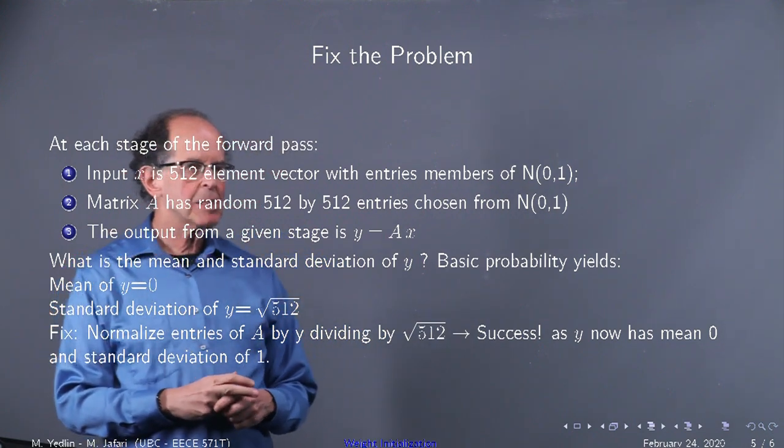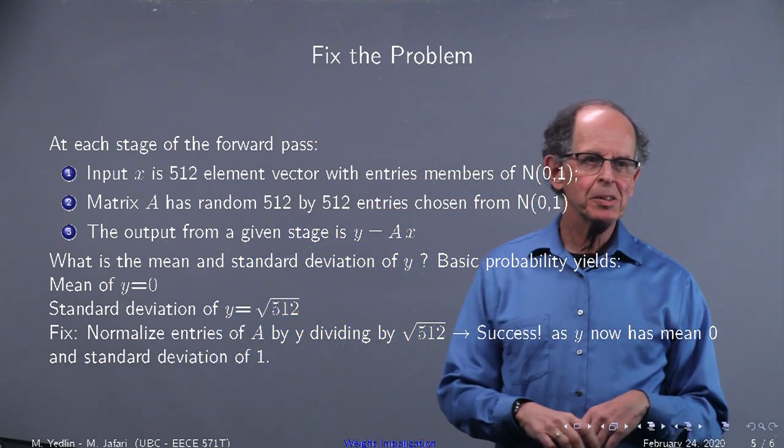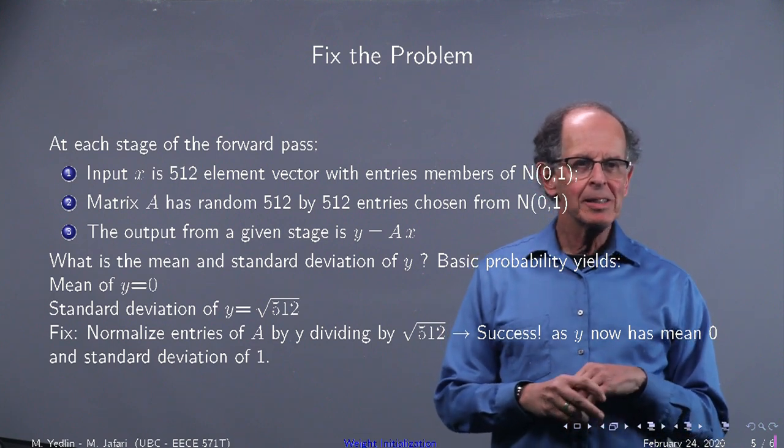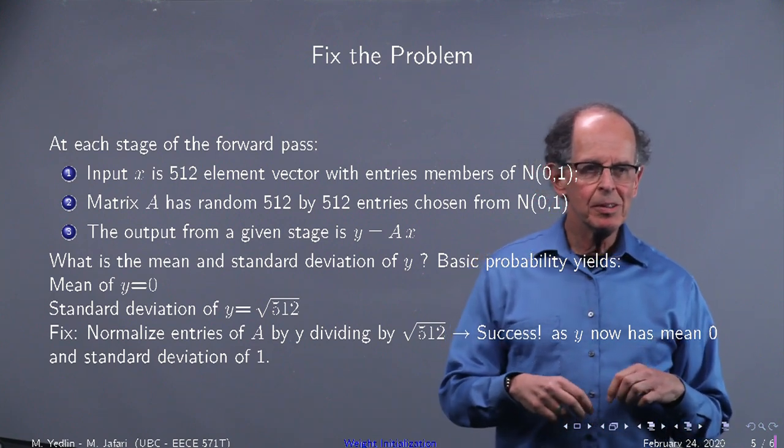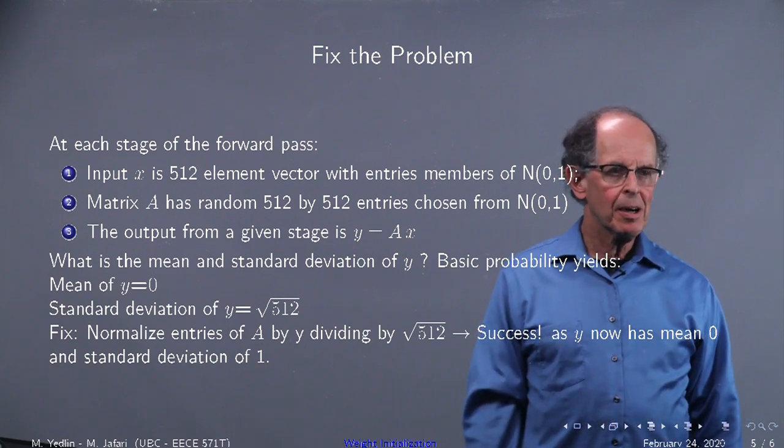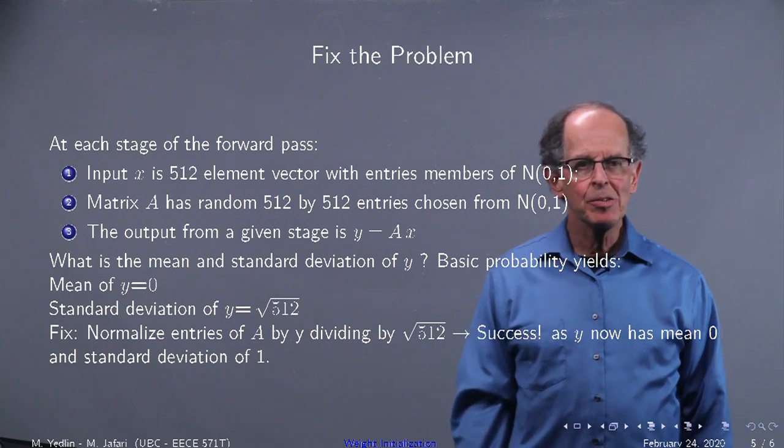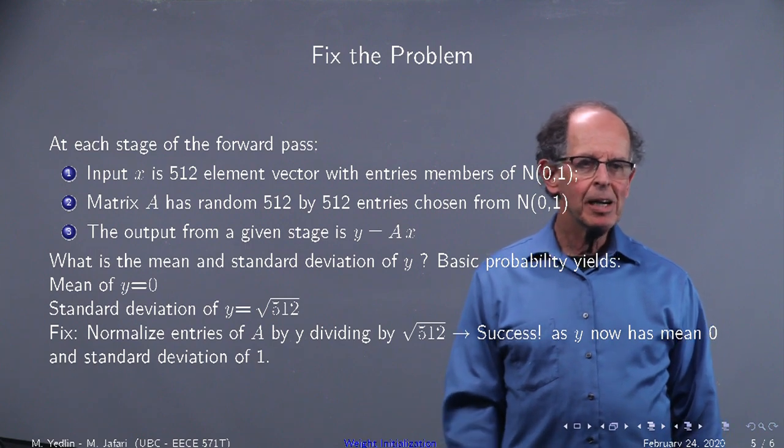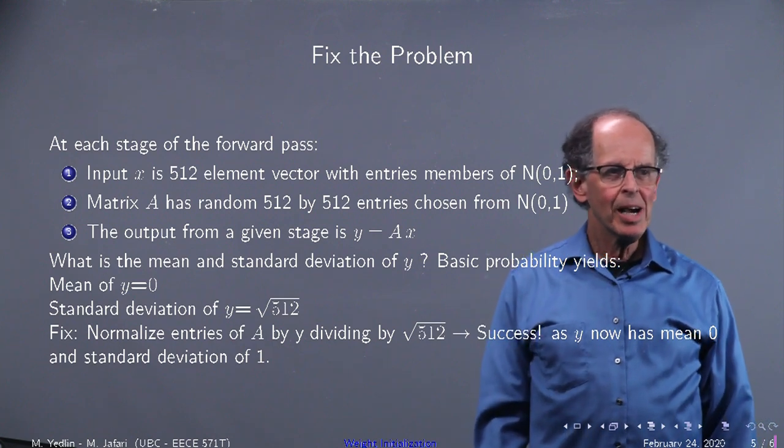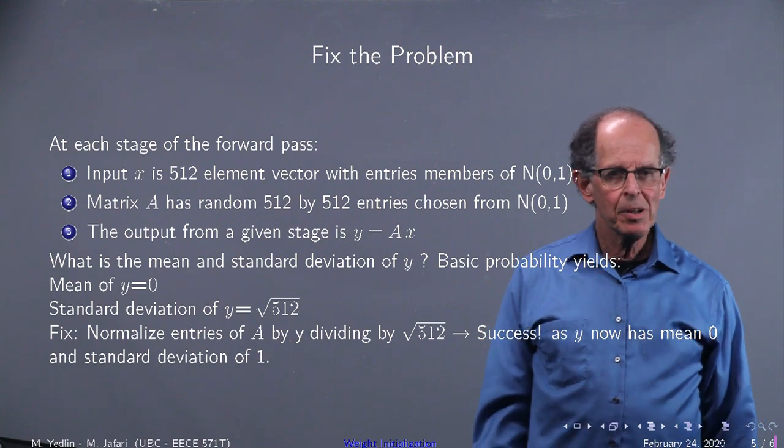Well, what's the mean and standard deviation of y? Here's a probability exercise for you: if you have sums and products of random variables independently identically distributed, you can show the mean of y is 0 and the standard deviation is square root of 512. So that means if you take the entries of A, our weight matrix, and divide by square root of 512, yay we did it! Y now has a mean of 0 and a standard deviation of 1 to within numerical error.